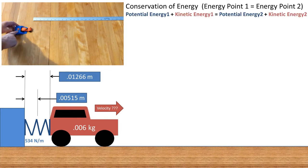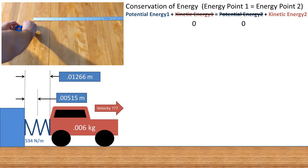So if we take the potential energy at point 1 and add the kinetic energy at point 1, this equals the potential energy at point 2 plus the kinetic energy at point 2. There is no motion at initial condition, so the kinetic energy can be removed and set to 0. And there is no potential energy at point 2, when the car has left the spring and is in motion, so the potential energy can be set to 0.